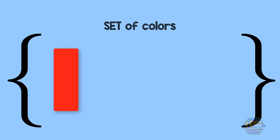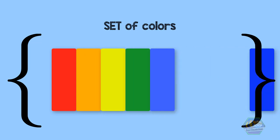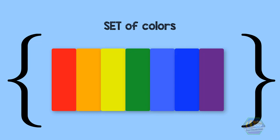And then we have this example, the set of the colors red, orange, yellow, green, blue, indigo and purple. This set is the set of all the colors in the rainbow. Easy, right?